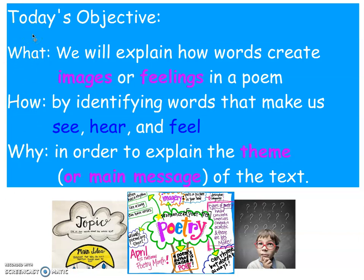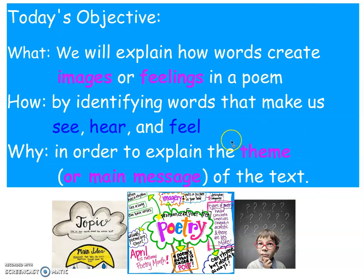So what we're going to be doing is we're going to explain how words create images or feelings in a poem — by identifying words that make us see, hear, and feel, and why — in order to explain the theme or the main message of the text. The poet is going to be giving us some sort of message through a theme, and they're going to do this by using very specific words that make us see, hear, and feel something. So let's go ahead and start practicing identifying those.